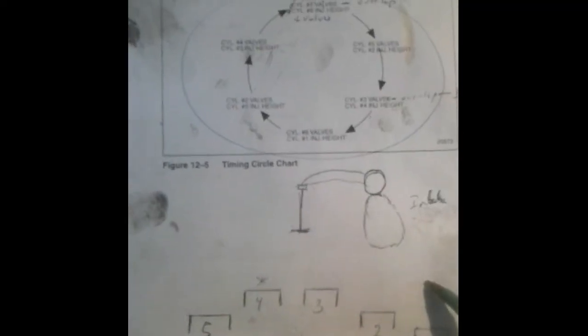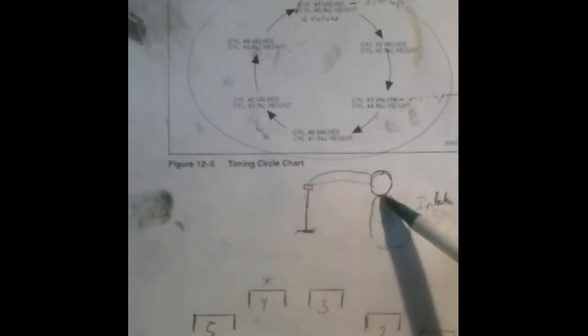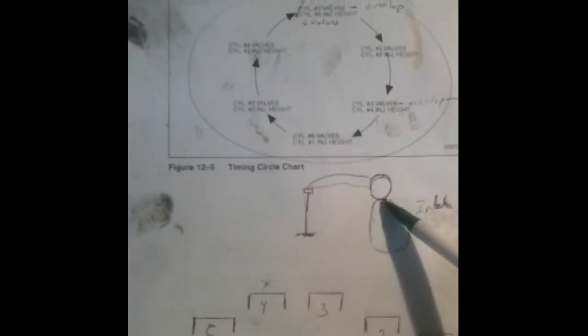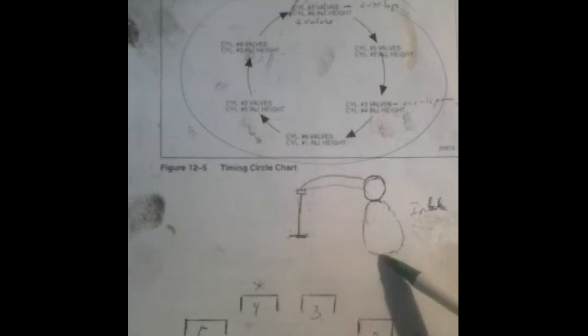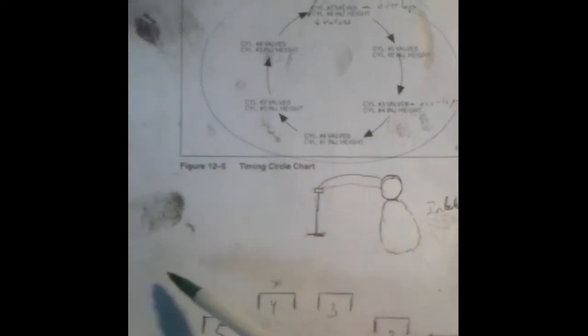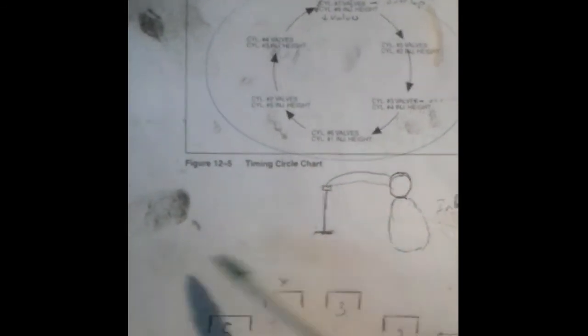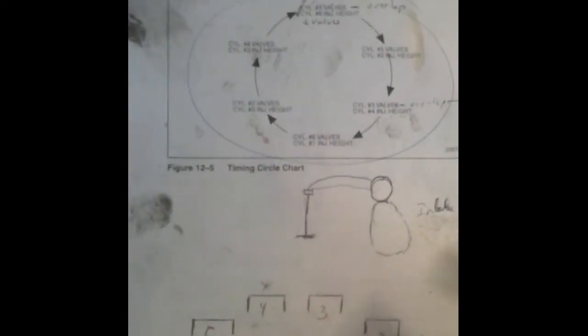So when cylinder number one, you do your intake valve overlap and you make your adjustments on cylinder six and vice versa. But you don't have to bar the motor over 360 or 720 degrees to get there. You just basically bar it over 120 degrees at a time and make the adjustments.